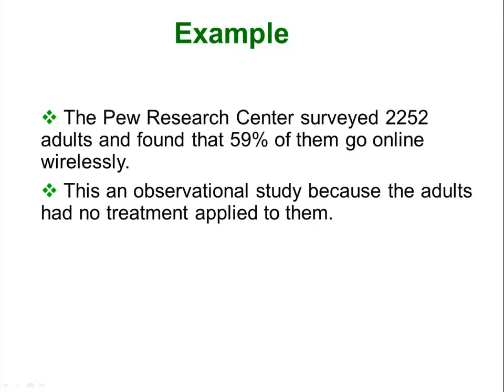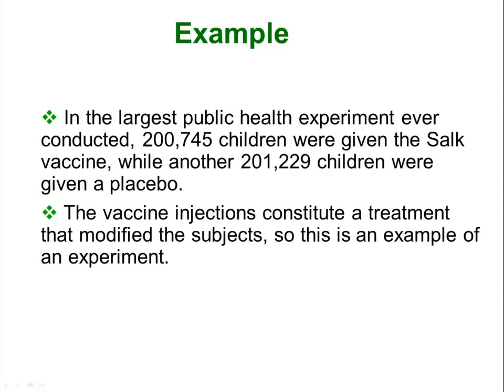Here is an example of the Pew Research Center surveying a bunch of people and finding out how many of them go online wirelessly. That is just an observational study because all we are doing is collecting data about a bunch of objects and we are not actually manipulating them or affecting them in any way. Whereas this is an example of an actual experiment because children were given a placebo and other children were given the Salk vaccine to see if there was a difference — I believe this was for polio.